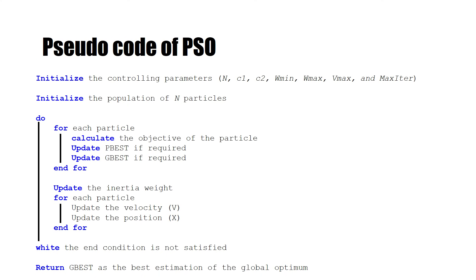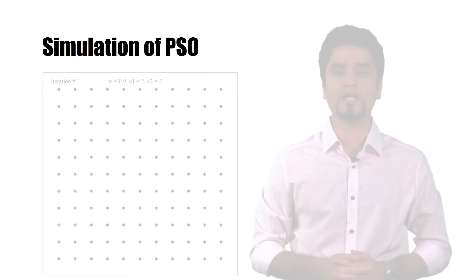Here is the pseudocode of the PSO algorithm. The algorithm starts with initializing the controlling parameters, then initializes the population of particles, and enters a main loop. In the main loop, we calculate the objective for each particle to update the p-best and g-best. After calculating the objective, p-best, and g-best, we update the velocity and position vectors for each particle. At the end of this loop, we return g-best as the best approximation for the global optimum.